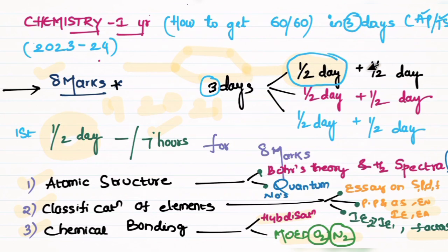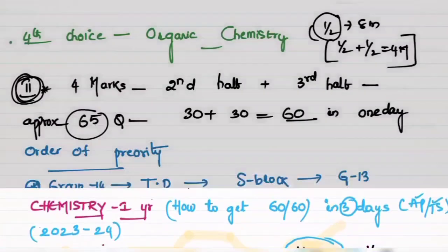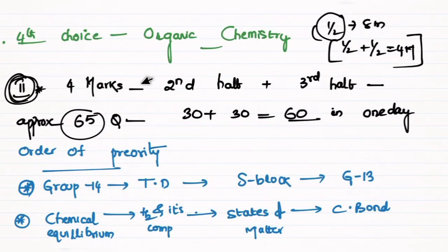The plan is three days — three halves. We spend half a day on eight-mark questions. The next half day and half day, we do four-mark jobs across the three halves.